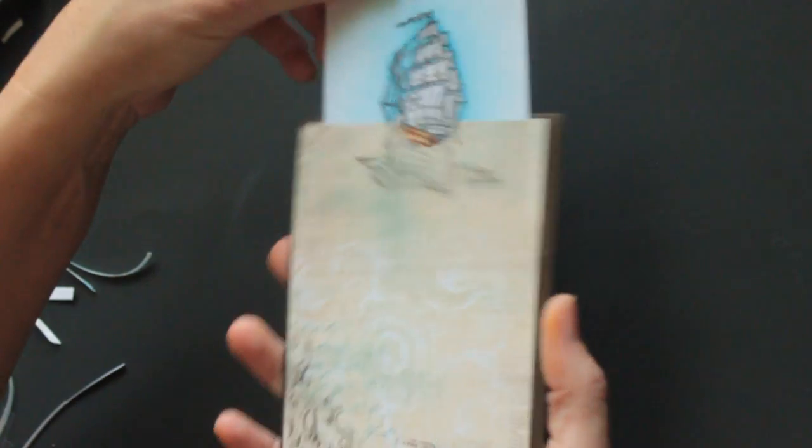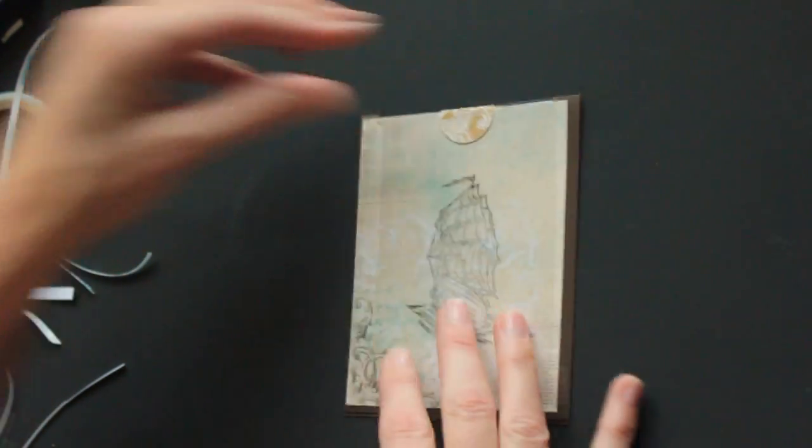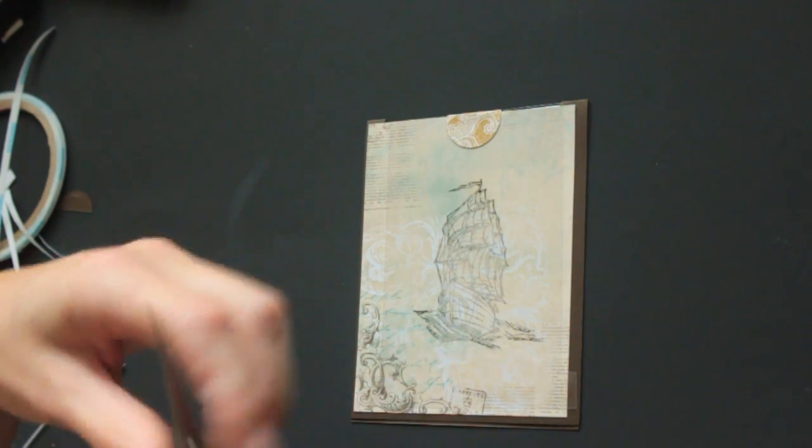And then we can tape that shut. There. Now we have this. It doesn't look very pretty, right? So we'll do the same on the front. We're going to cut the tabs from the plastic down a little bit.